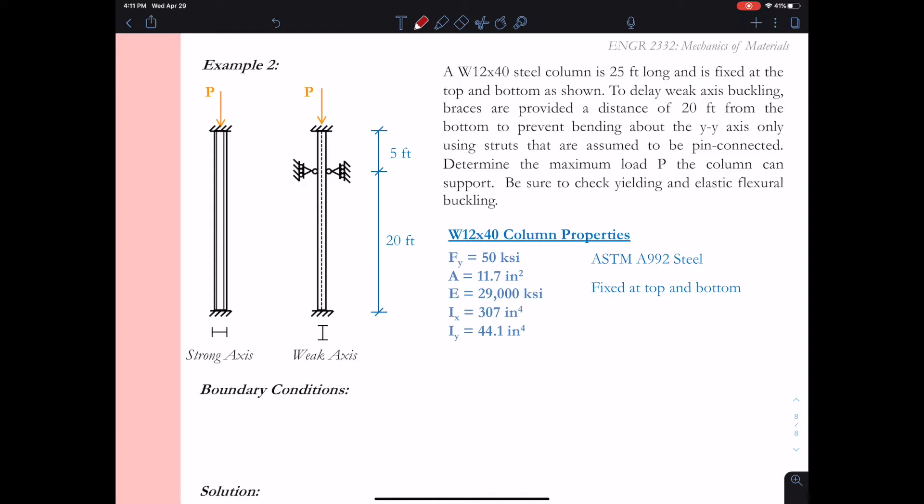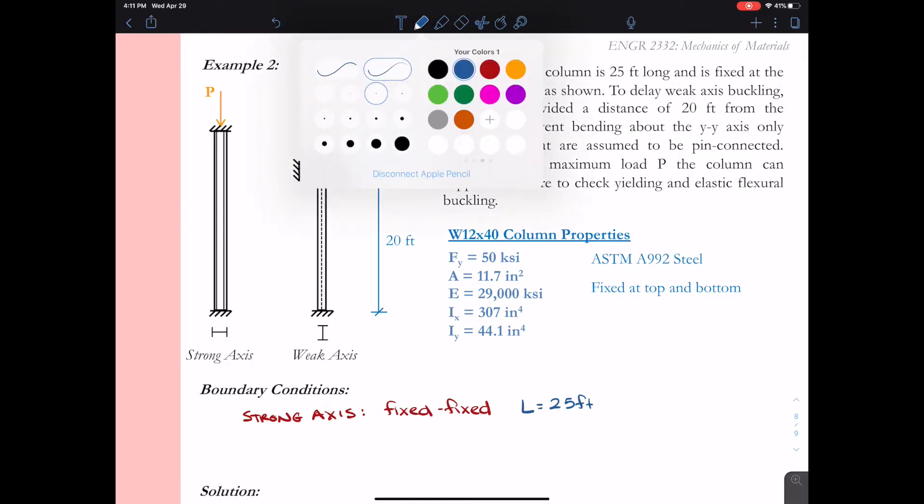I can't keep that accent up for a whole example problem, so let's go ahead and move on to the boundary conditions in this particular problem. So we see that on the left-hand side we have what we classify as strong axis buckling. It is fixed at the top and fixed at the bottom, so we say that this is a fixed-fixed condition. We also see that the total length over which the strong axis is present, that can possibly buckle, that total length is 25 feet.